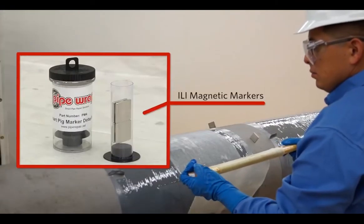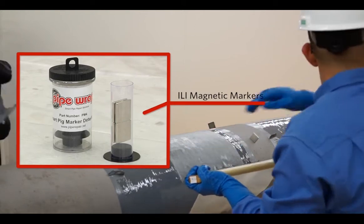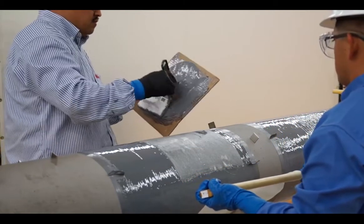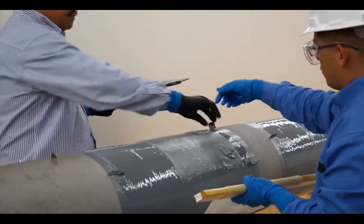After the installation of the isolation layer, locate the areas to position the ILI markers. At these locations, apply primer and place the markers.